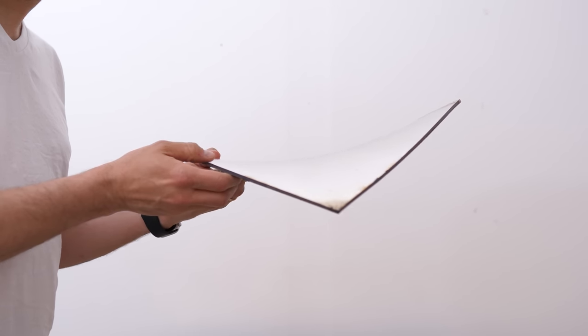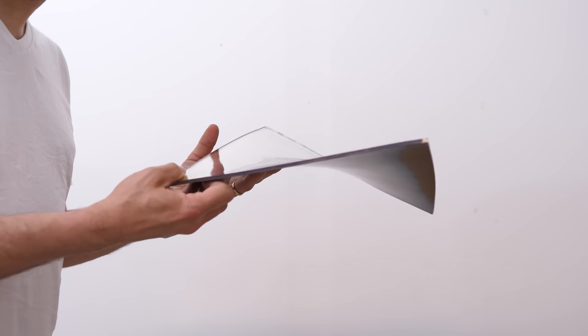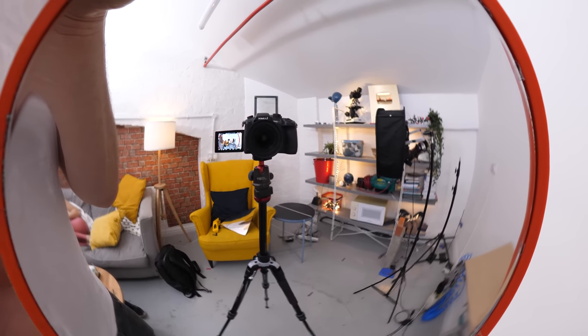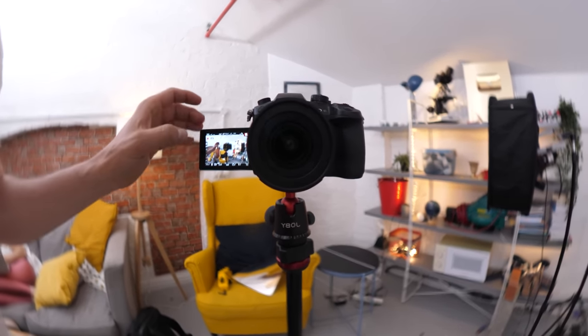This mirror is convex and concave at the same time. So what's it like to look into this mirror? Like we all know what it's like to look into a convex mirror like this security mirror. It creates a sort of fisheye effect.